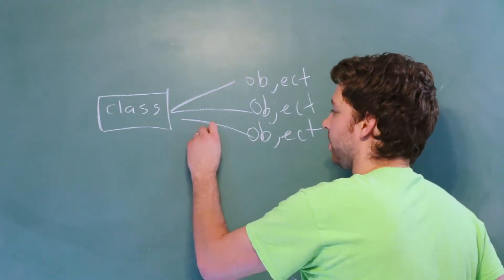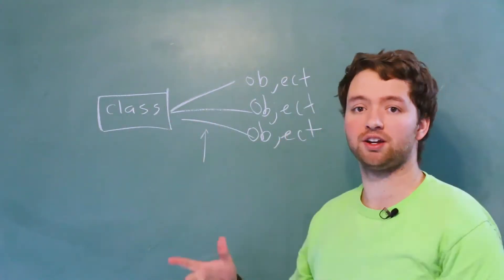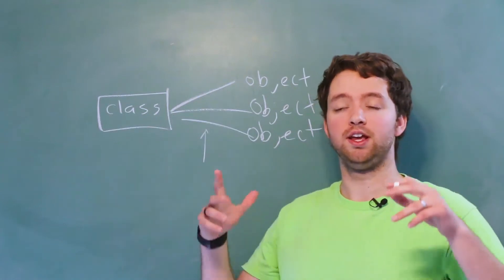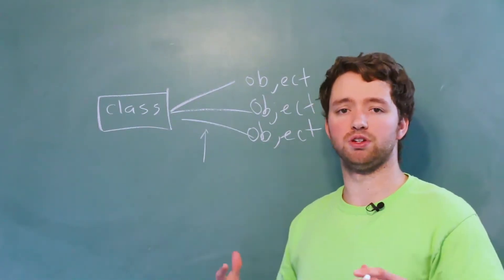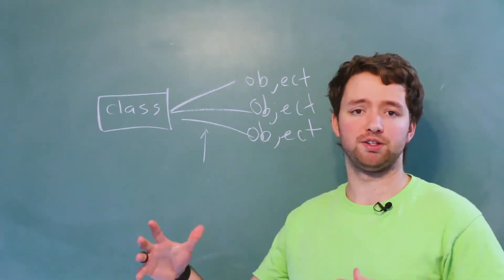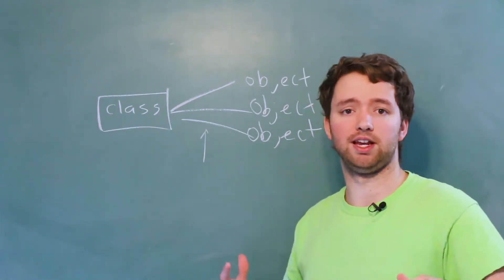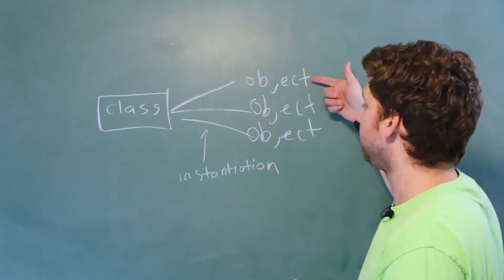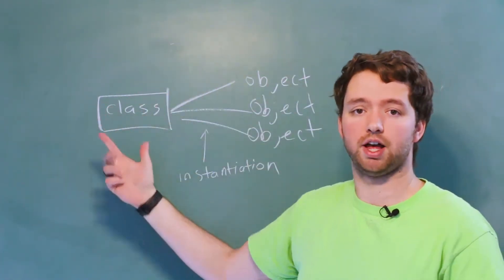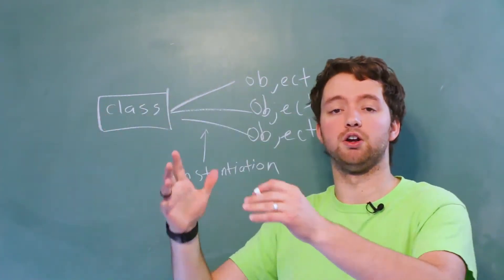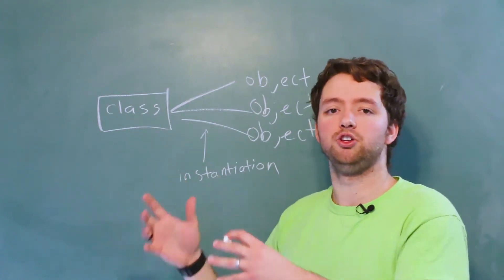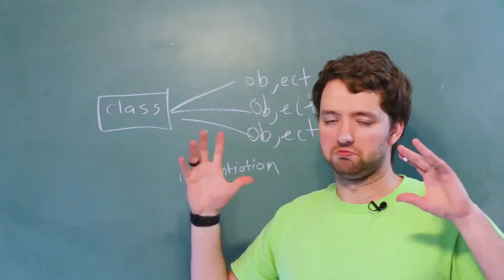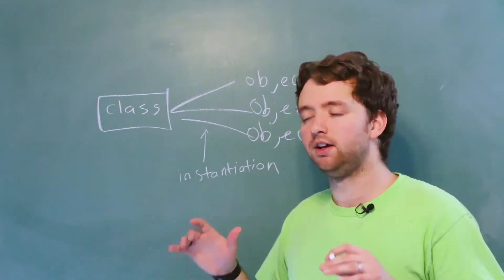Now, this process of going from a class and creating an object — that's known as instantiation. And that is a really good word just to use at parties, impress your friends. So: instantiation. These objects are also known as an instance of this class. You might hear 'object,' you might hear 'instance of a class,' or some variations of this.